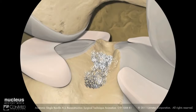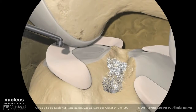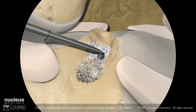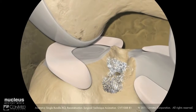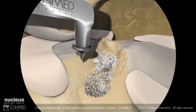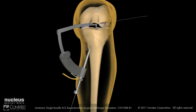Switch the arthroscope to the anterolateral portal. Next, insert the light wave ablator into the anteromedial portal to mark the center of the tibial ACL footprint. Set the angle of the pin ACL guide to 55 degrees. Insert the tip into the anteromedial portal, placing the tip of the guide into the center of the tibial ACL footprint. Advance the external guide sleeve flush to the anterior tibial cortex.